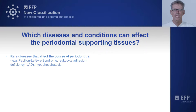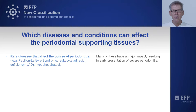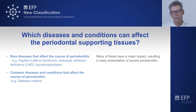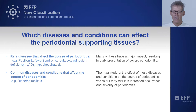Many of these, even though they are rare, once they are present, they have a major impact and result in early presentation of severe periodontitis, already at young age. And then there are other more common diseases and conditions that can also directly affect or have an influence on the cause of periodontitis. A typical example here is diabetes mellitus. The magnitude of the effects on conditions is more variable, but overall they result in increased occurrence and severity of periodontitis.